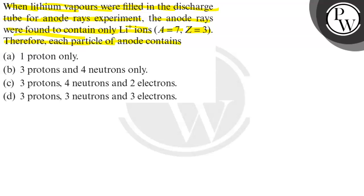Lithium vapors are in a discharge tube filled with lithium vapors. Anode rays are found to contain only Li plus ions. Anode rays are positively charged. If we have Li plus ions, therefore, each particle of anode contains what?